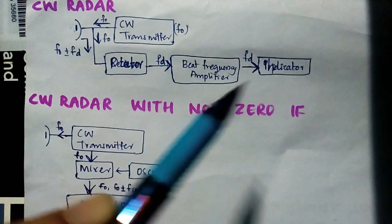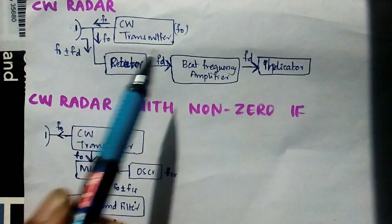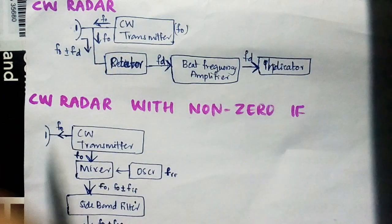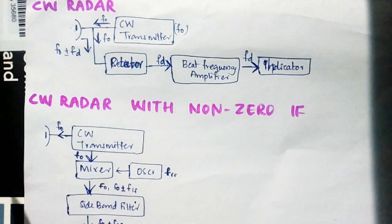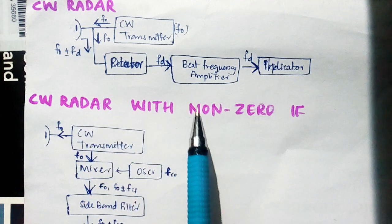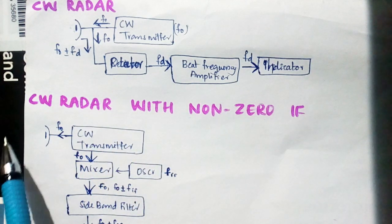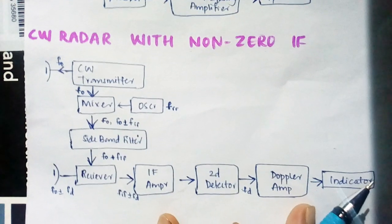Once again, the transmitter section has just a CW transmitter with f0 frequency. In the receiving section we have detector, amplifier, and an indicator. Now in the second section we have CW radar with non-zero IF.